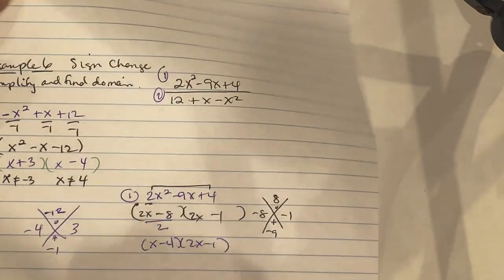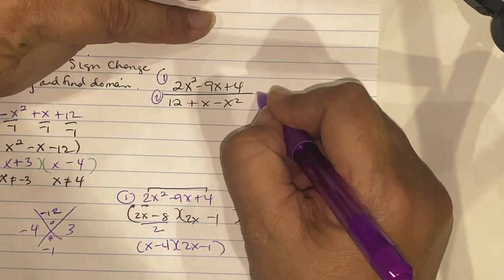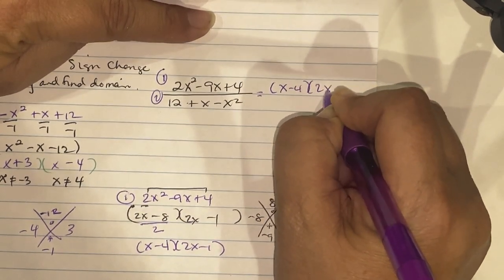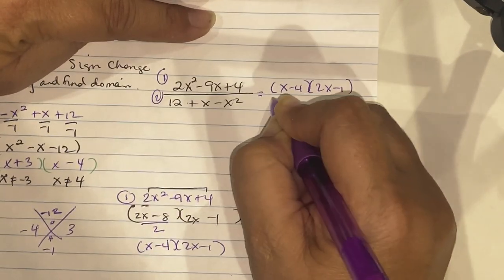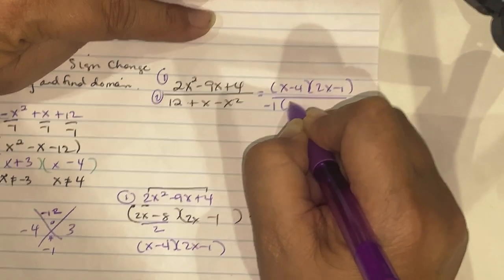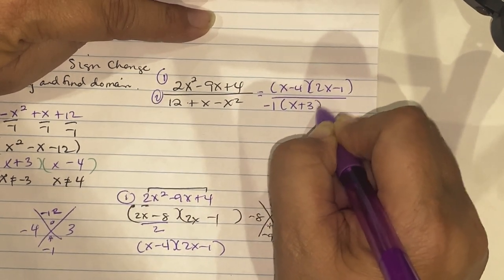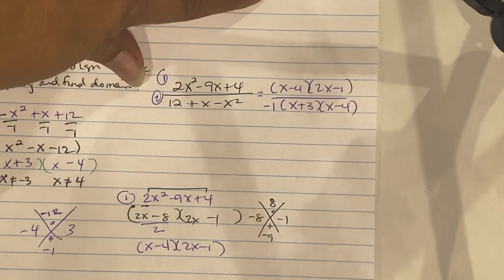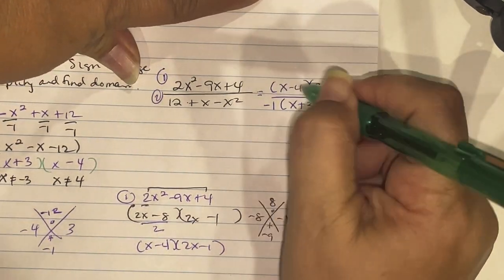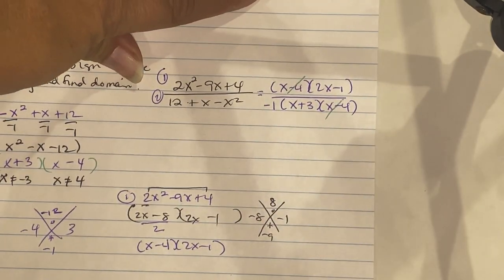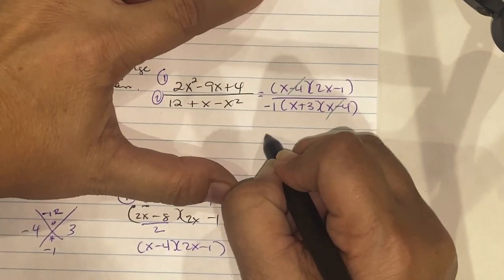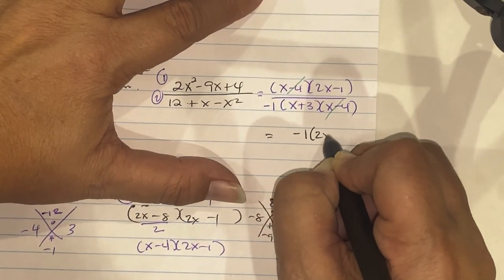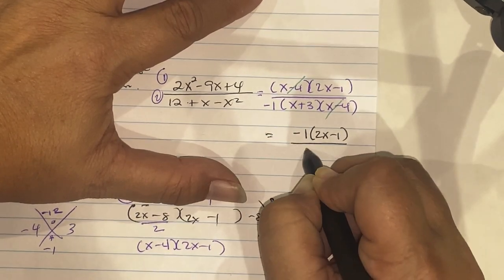Going back to the original: numerator is x minus 4 times 2x minus 1, denominator is negative 1 times x plus 3 times x minus 4. Cancel x minus 4, leaving negative 1 times 2x minus 1 over x plus 3 as the simplified form.